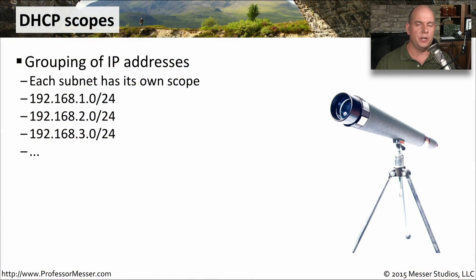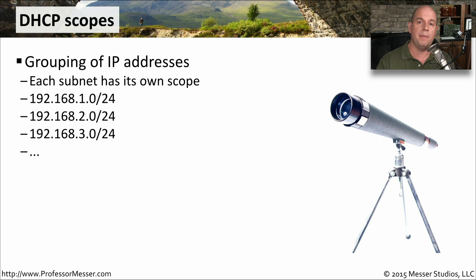In an earlier video, we were talking about the DHCP process and how the DHCP server contains a pool of IP addresses. This pool of IP addresses is configured as a scope. Generally, you would have one DHCP server that's able to handle IP addresses configured on many different subnets simultaneously, so you would create multiple scopes within your DHCP server to provide that automation.